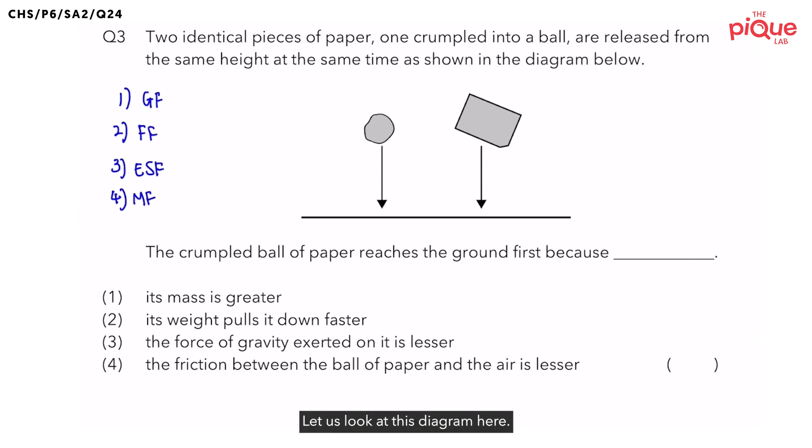Let us look at this diagram here. On the topic of forces, we should always label the forces that are acting on the object. We will always start with gravitational force, as gravitational force acts on all objects with mass. Let us draw the gravitational force acting on both pieces of paper downwards.